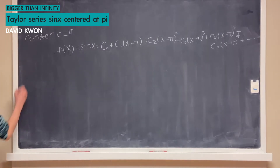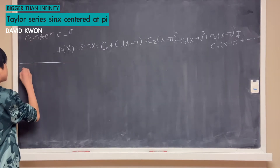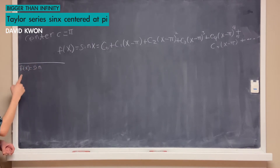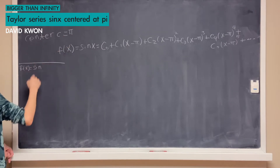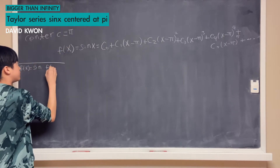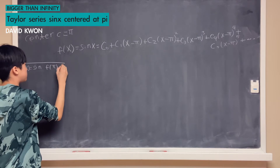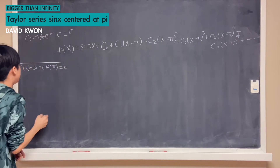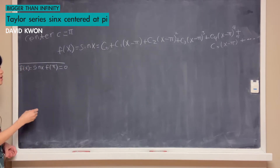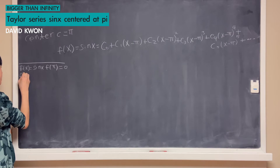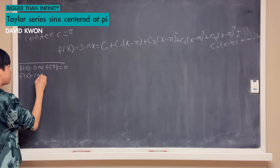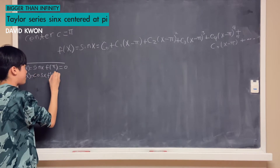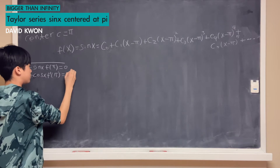Setting that aside, we write our function sin x and set x equal to π. So f(π) equals sin(π) which equals 0. Then we differentiate sin x, so f′(x) equals cos x, and therefore f′(π) equals negative 1.